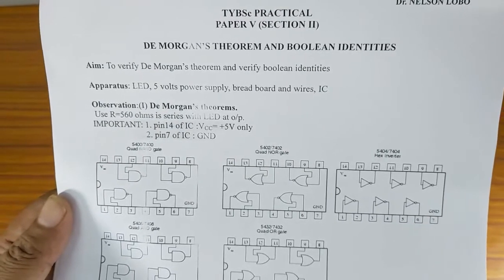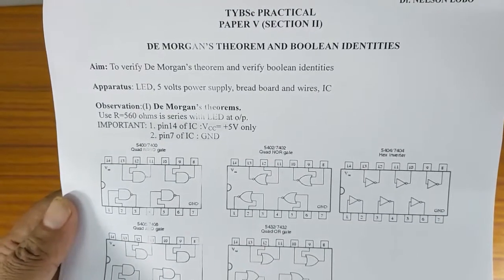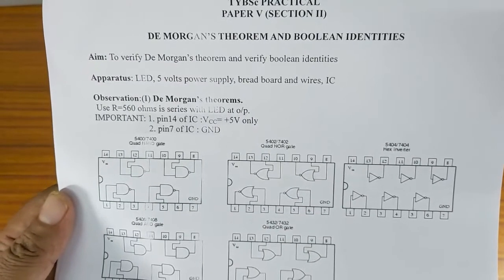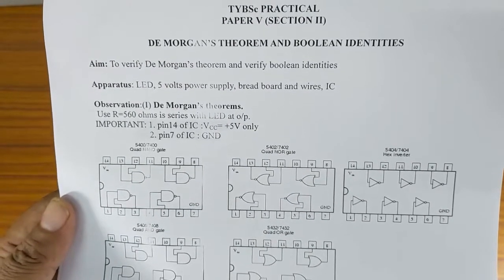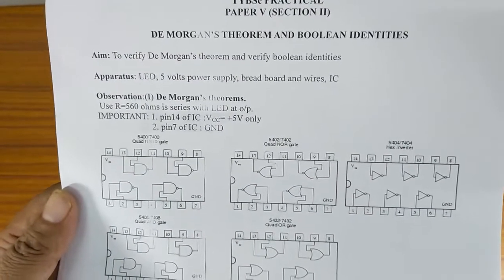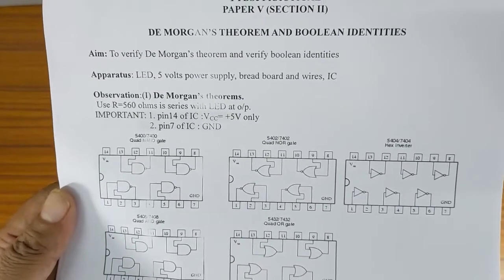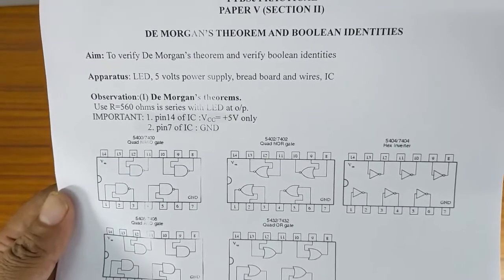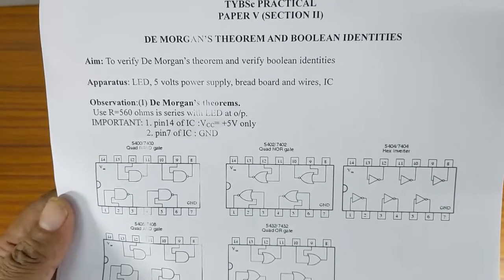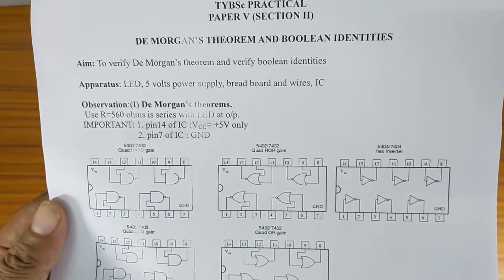Welcome students, this is your second experiment: De Morgan's theorems and Boolean algebra. We have to prove De Morgan's theorems. There are two De Morgan's theorems and there are some Boolean identities which are mentioned. You have to prove them by using the truth table.